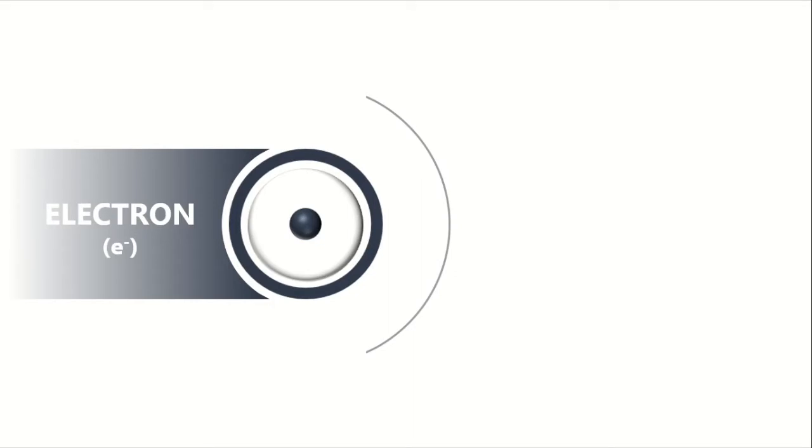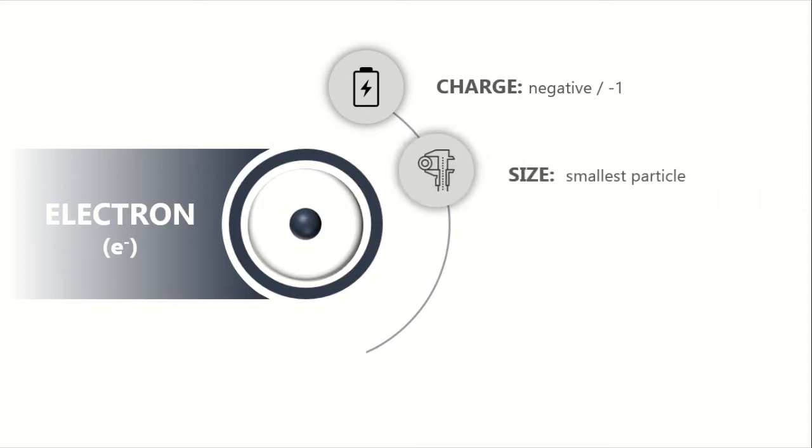Electron, with the symbol e-, is a negatively charged particle. It has a negative 1 charge. It is the smallest of all the three particles. It is also the lightest, having a rest mass of 9.11 times 10 to the negative 28 grams. I cannot begin to imagine how light it is.